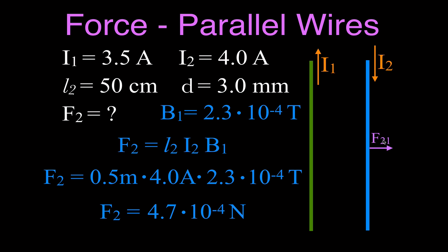We could also calculate the force on wire one from wire two, but thanks to Newton's third law, the forces are equal but opposite — the magnitude is the same, just pointing in the opposite direction. That's how you determine both the direction and the magnitude of the force between parallel wires that have currents flowing in opposite directions. Thanks for watching — I hope you found that video helpful.